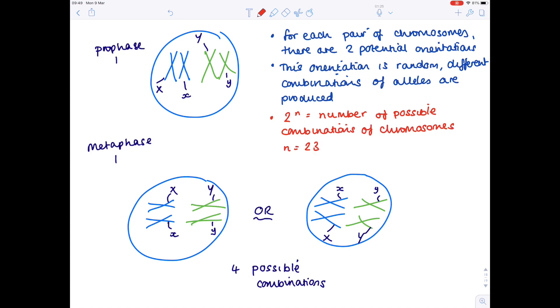n equals 23 in humans. And remember that's because that's the haploid number of chromosomes. And if you actually plug that into the calculator, you'll therefore see that there's over 8 million potential combinations of chromosomes, which is kind of mind-blowing and actually helps to explain why we are so varied.